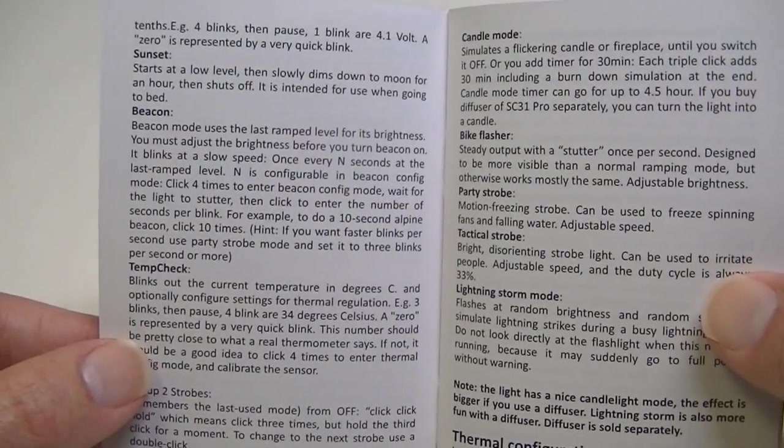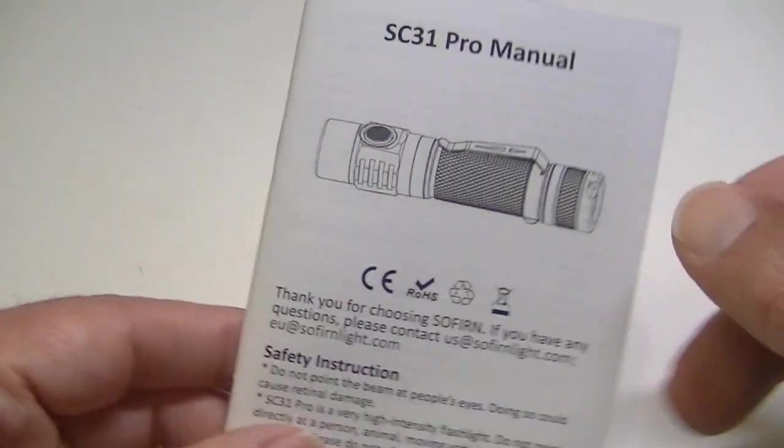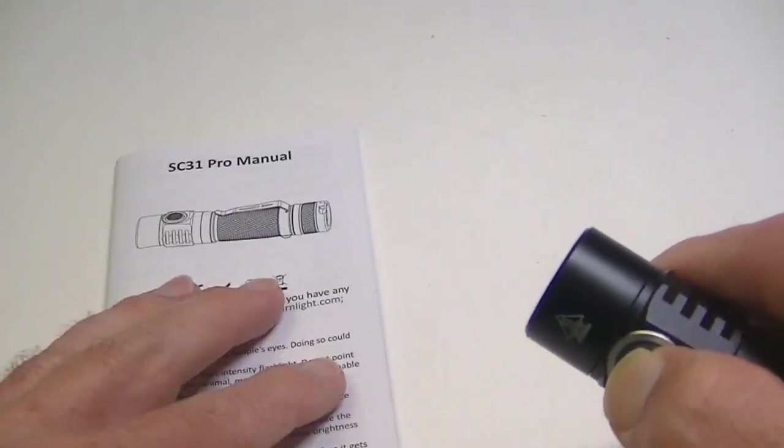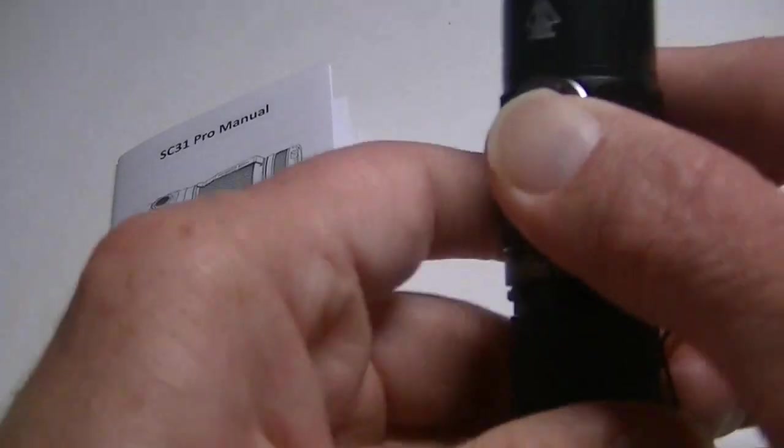Anyway, let's press the button here, turn it back on, and I'll turn this light off and we'll just do a quick look at the beam here. So I believe, yeah, this is the lowest mode that I have it set at right now. So this is the lowest mode right now, and it's just low enough to be able to see the manual in front of me and just a little bit on the wall in front of me over here.